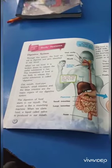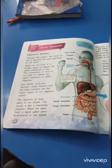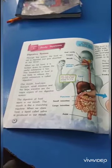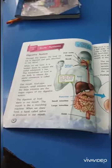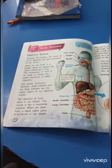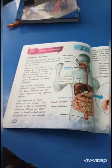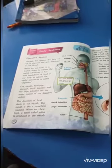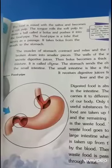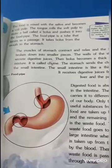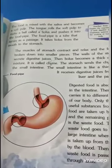The mouth, stomach, small intestine, and large intestine are the major organs of the digestive system. The digestion of food starts in our mouth. The mouth is like a munching machine. When we chew food, a liquid called saliva is produced in our mouth.